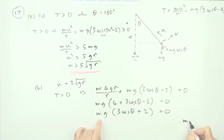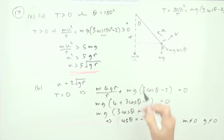Tidy up more: mg times 3 cos theta plus 2 should be zero. If things multiply to give zero, either one of them is zero. But the mass isn't zero, and g certainly isn't zero, so the only thing that can be zero is this, which means that cos theta equals negative 2 thirds.